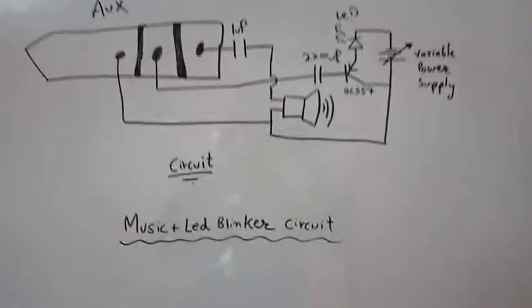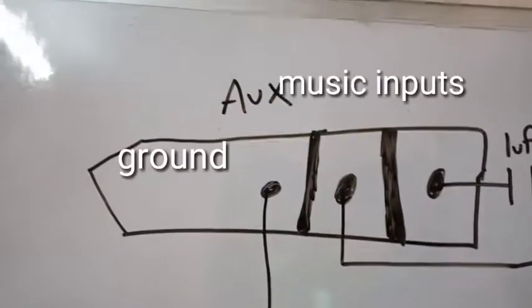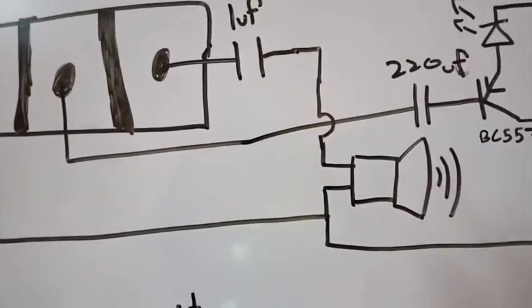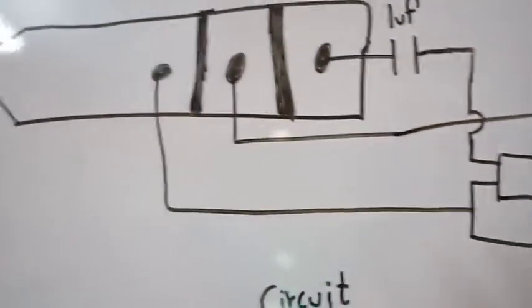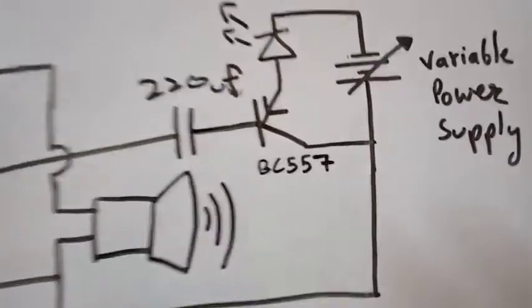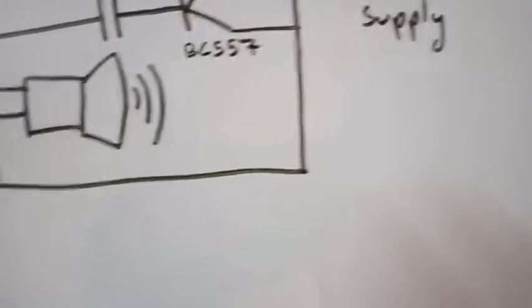This is the circuit for the music plus LED blinker circuit. The bigger one of the AUX cord is actually the ground and the two are the AC inputs. I have used the UF capacitor, one microfiber capacitor for the speaker and the 220 microfiber capacitor for the PNP Transistor. This is the LED and I have used a variable power supply.